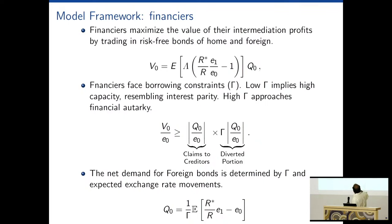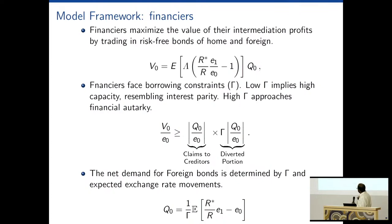Low gamma implies high capacity — low gamma is essentially the UIP case. But high gamma approaches financial autarky. So a very high gamma corresponds to an inefficient intermediary with tight intermediary constraints. The dollar intermediation by the intermediary is essentially the net supply of dollars, which is a function of the UIP wedge.